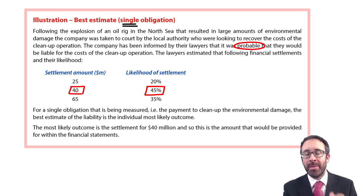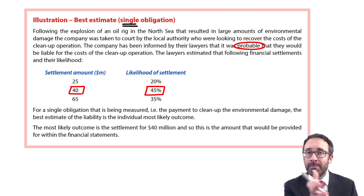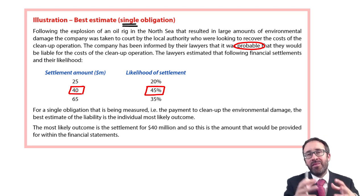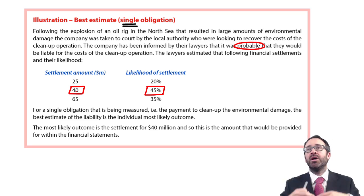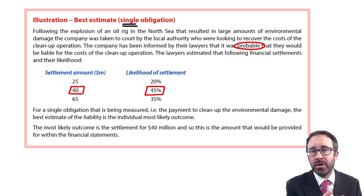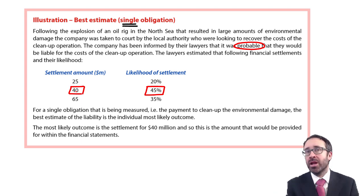As that is the most likely outcome, we make a provision of $40 million — credit provision, debit statement of profit or loss. You might think 45% is less than 50%, but that's not looking at the outcome of the court case itself. The outcome of the court case is that we're going to lose — it's probable, greater than 50% chance — so we make the provision. It just needs to be the most likely outcome for the measurement. So here we make a provision for $40 million.